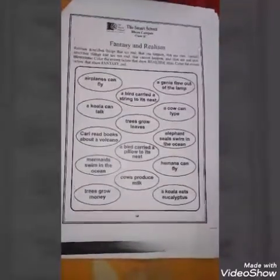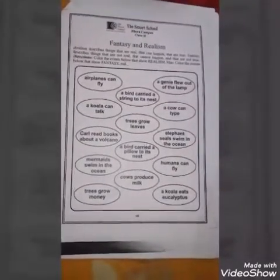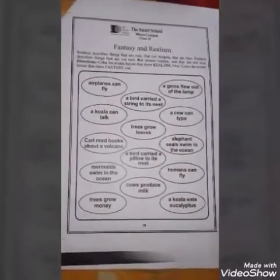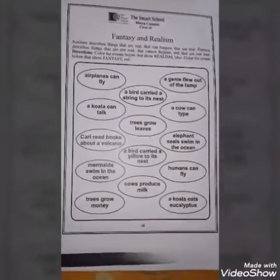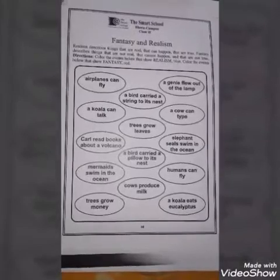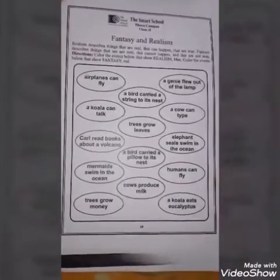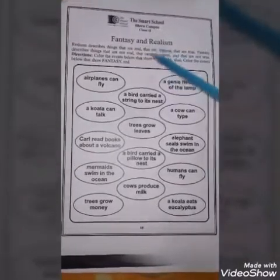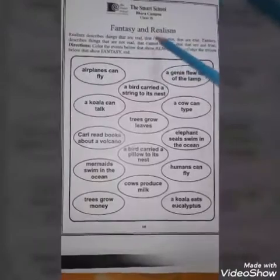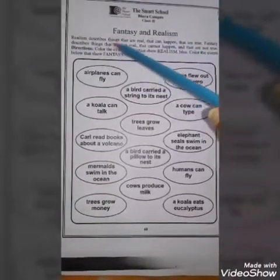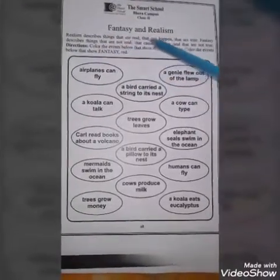Today we are going to do page number 60 of class 2 summer pack SST. It is an activity, so you have to understand it first of all. The main topics are fantasy and realism. Realism describes things that are real and can happen and are true.